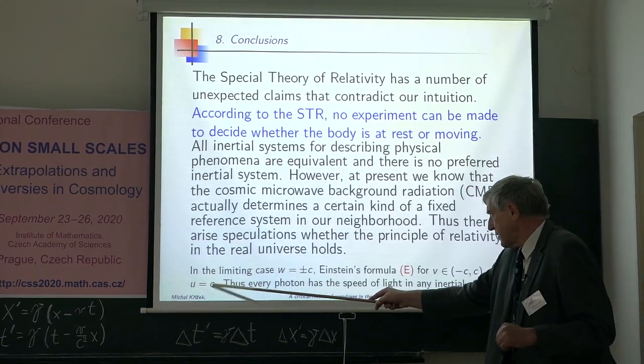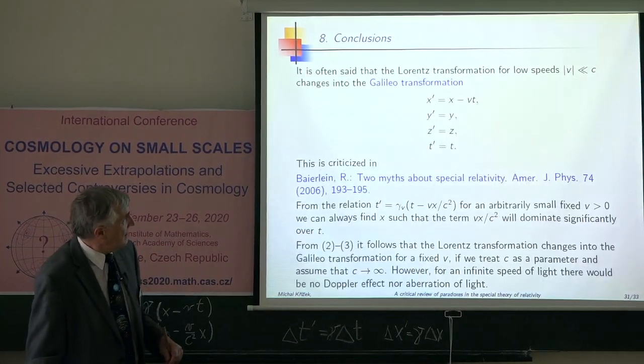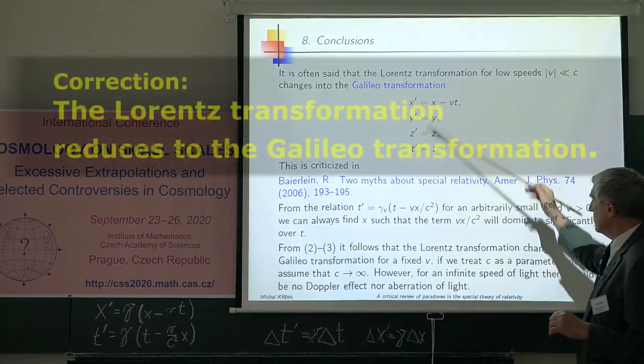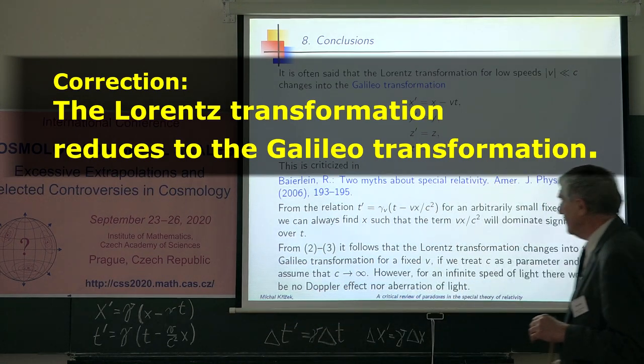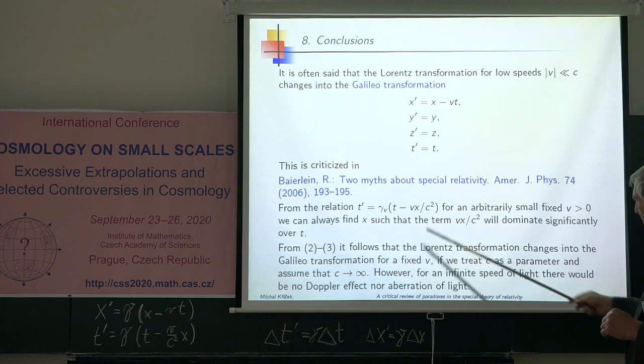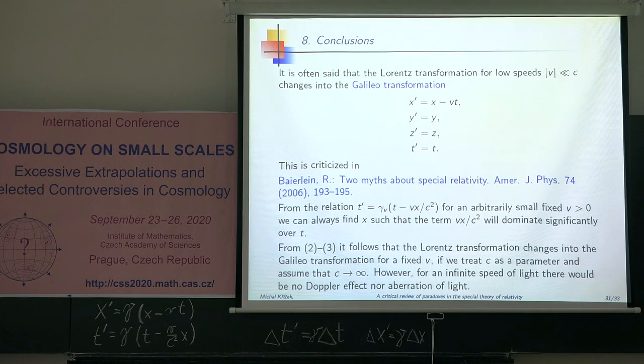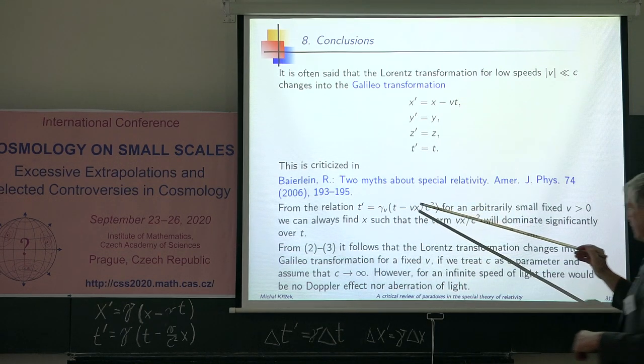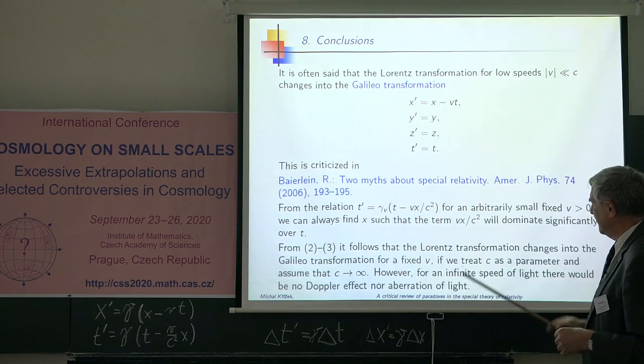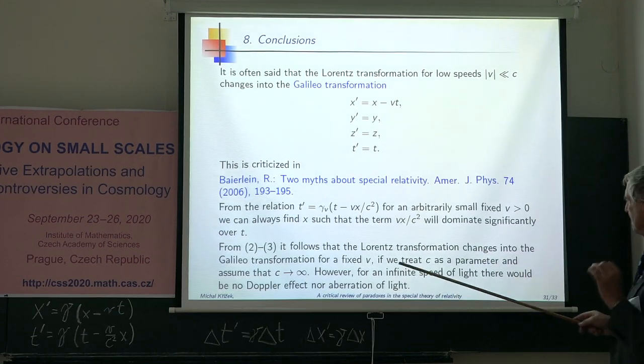Moreover, in the limiting case, the Einstein formula gives such a velocity so that every photon has a speed of light in any inertial system. Many books claim that for small velocities, the standard Galileo transformation reduces to Lorentzian transformation. But in this paper, the author finds that it is not true. Because this is the relation for time dilation. Now assume that the speed is arbitrarily small but constant. If this is fixed, then you always can find x sufficiently large that this term dominates over that term. We always can find x such that this term will be much bigger than that term.